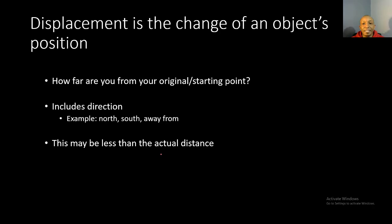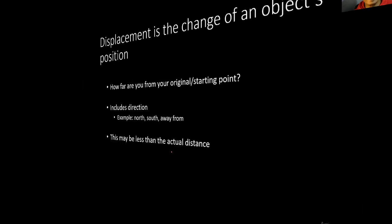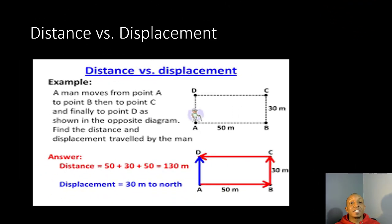Displacement is a change of an object's position — the question is how far you are from your original starting point. This also includes a direction, for example north, south, east, west, away from, or towards. Our displacement can actually be less than our actual distance, as we'll show in the next slide.